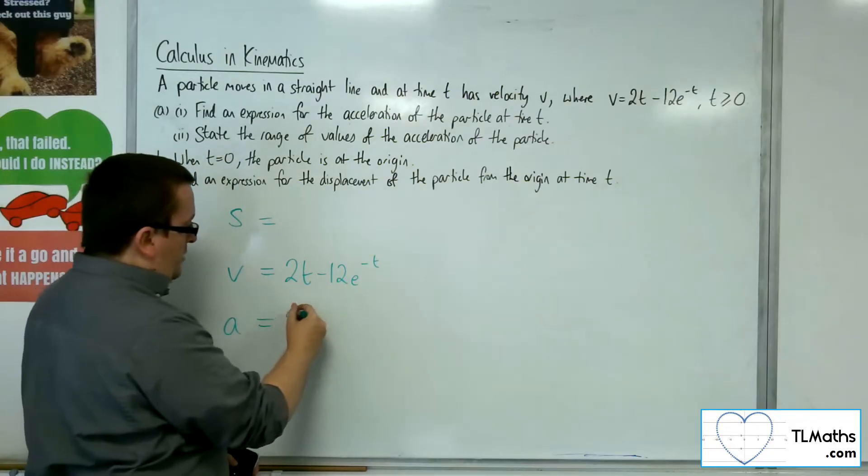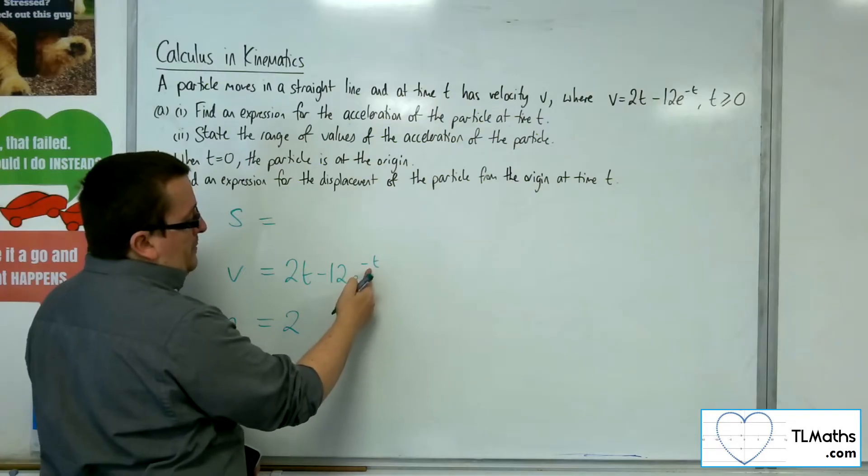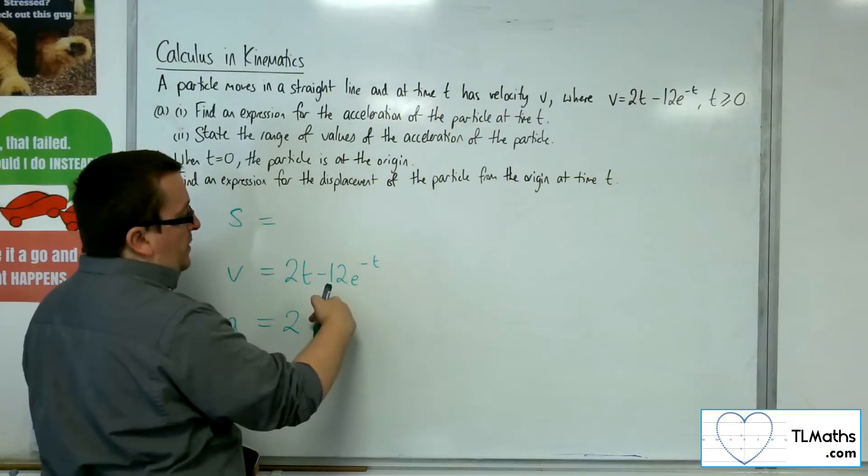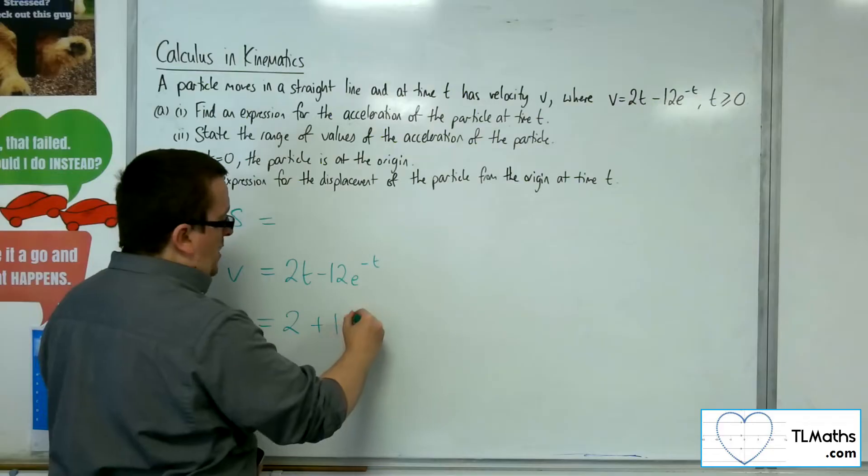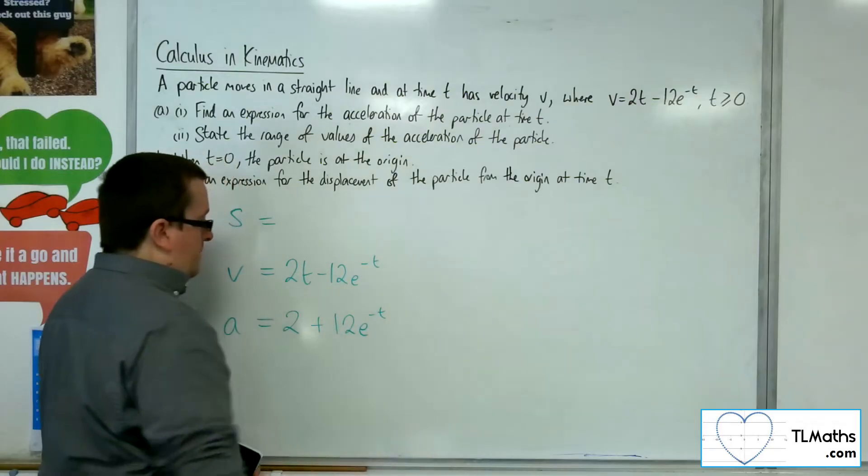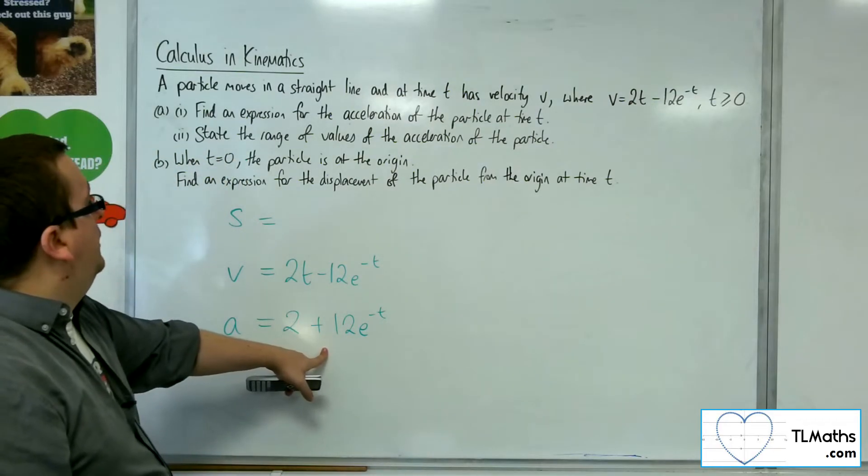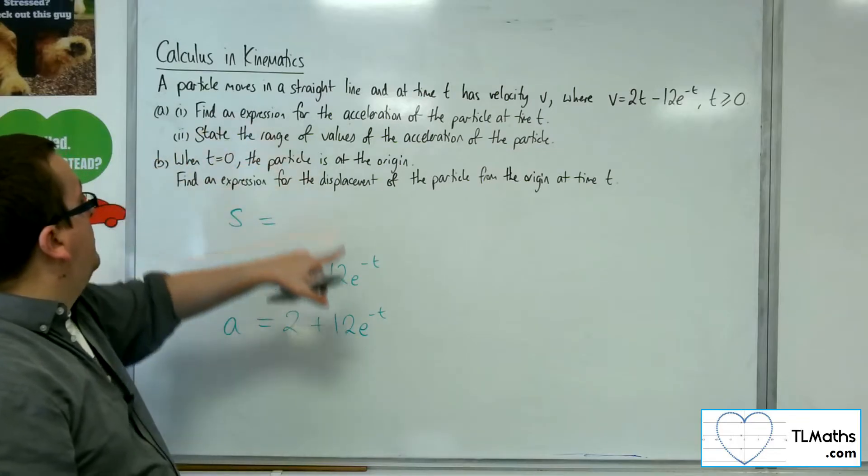2t differentiates to 2. Now the coefficient of the t here is minus 1. That multiplies with the minus 12, so we get plus 12e to the minus t. So that is my expression for the acceleration, as required for part 1.